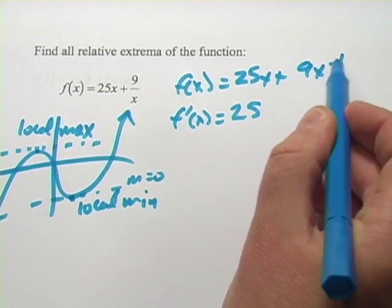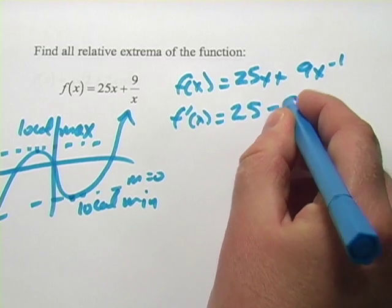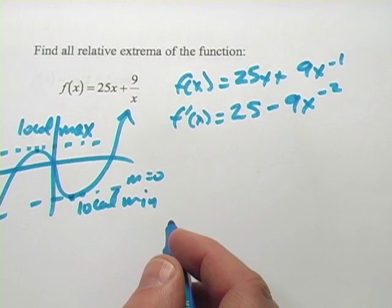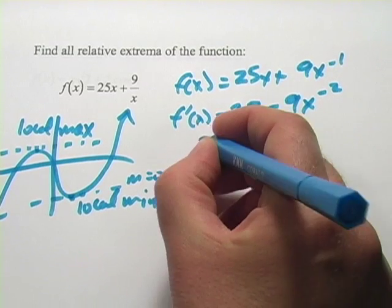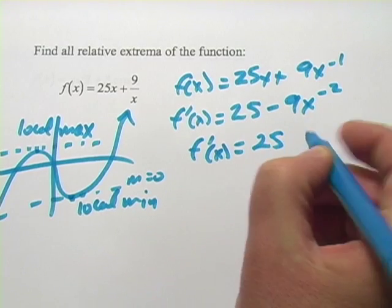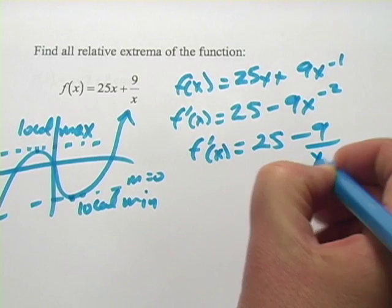And then it'll be negative 1 times 9. So that's minus 9. And then we reduce the power by 1. So times x to the negative 2. And then I can rewrite that like this. 25 minus 9 over x squared.